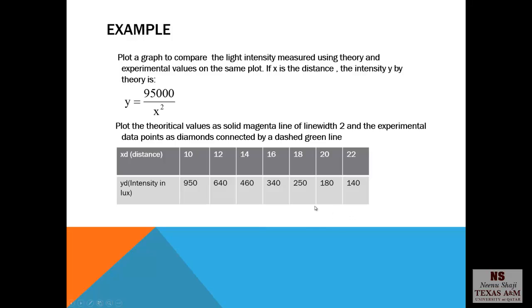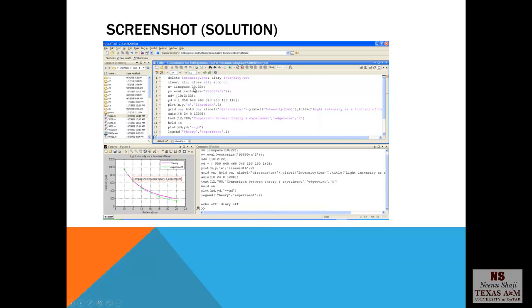Here is an example for a plot to compare the light density measured using theory and experimental values on the same plot. If x is the distance, the intensity y by theory is y equals 95,000 over x square. Plot the theoretical values as a solid magenta line of line width 2 and experimental data points as diamonds connected by a dashed green line. So first of all you create the vector x. Then you can use the eval vectorize command to evaluate y for all the hundred values of x between 10 and 22. xd, we are defining xd as given in the question with increment of 2 for the data points. And yd refers to the data point as given in the question.